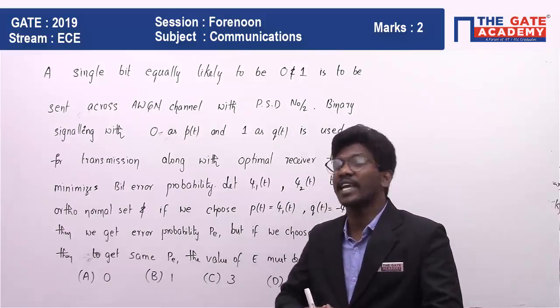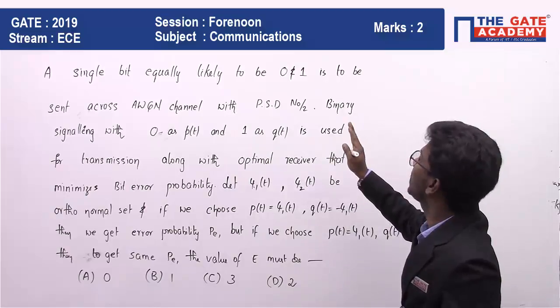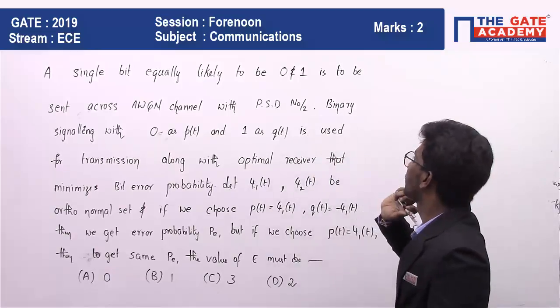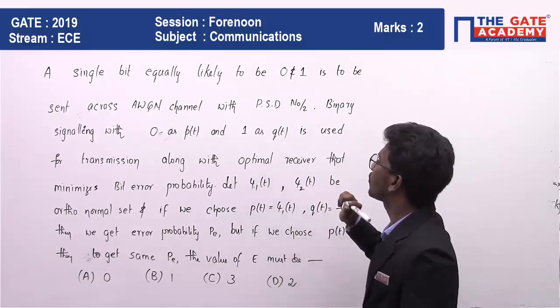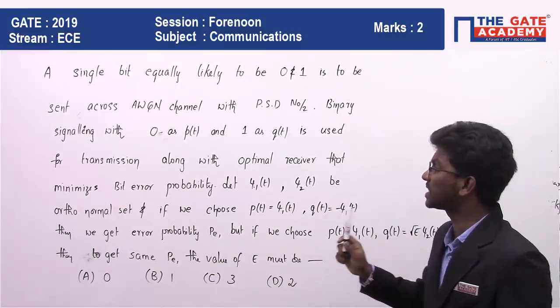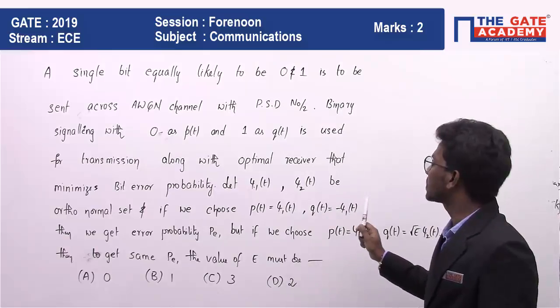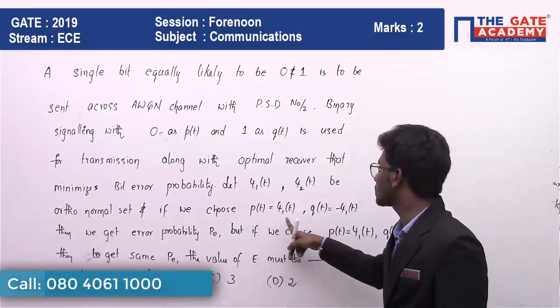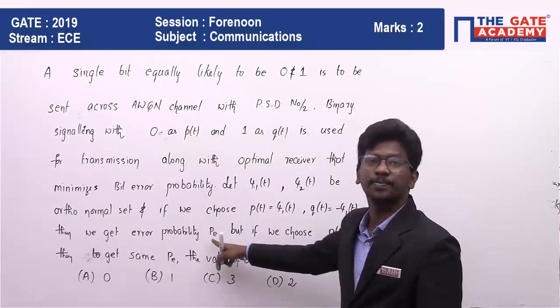Let us start by reading the question. A single bit equally likely to be 0 and 1 is to be sent across AWGN channel with power spectral density N0 by 2. Then binary signaling with 0 as P(t) and 1 as Q(t) is used for transmission along with optimal receiver that minimizes the bit error probability. Let ψ1(t), ψ2(t) be orthonormal set and if we choose P(t) equal to ψ1(t) and Q(t) equal to minus ψ1(t), then we get error probability as Pₓₑ.